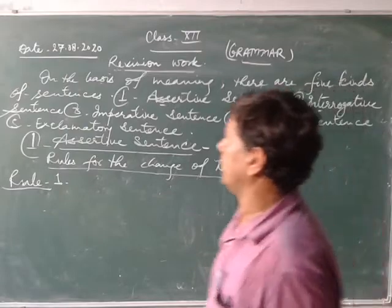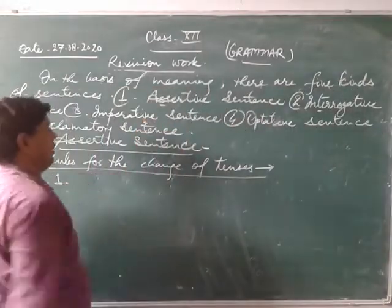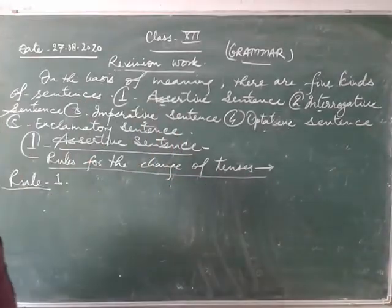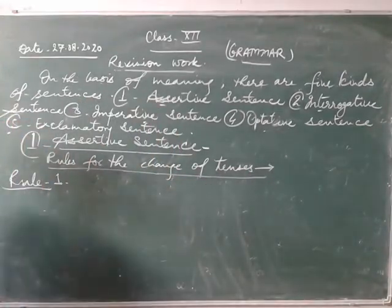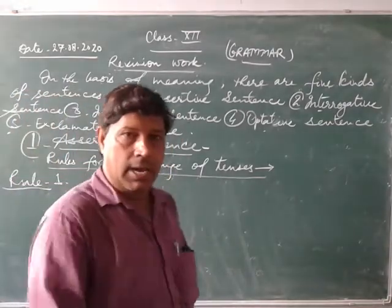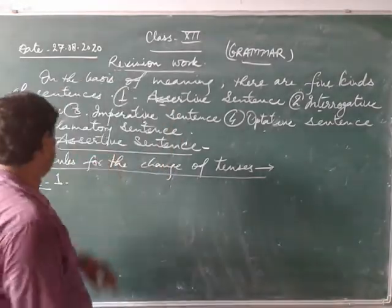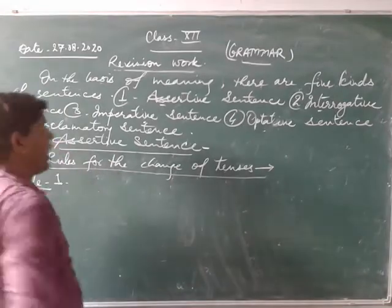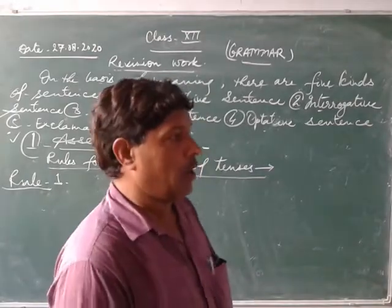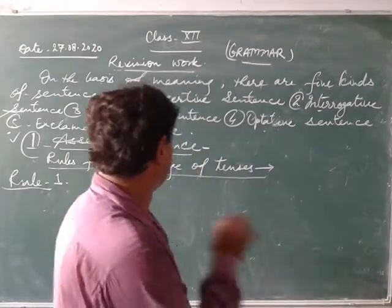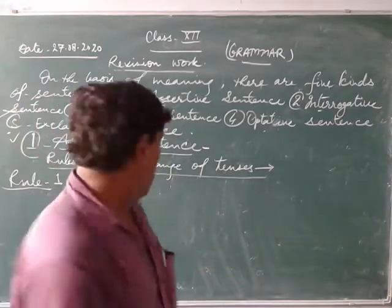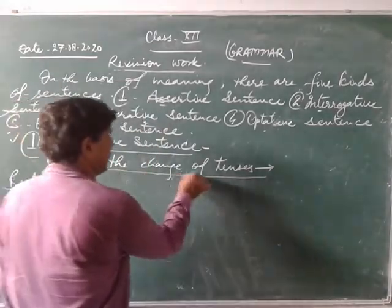The five kinds of sentences are: number one, assertive sentence; number two, affirmative sentence; number three, normative sentence; number four, affirmative sentence; and number five, exclamatory sentence. For number one — the assertive sentence — you have to change direct narration into indirect narration using the rules for the change of tense.